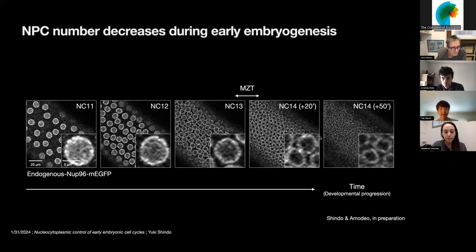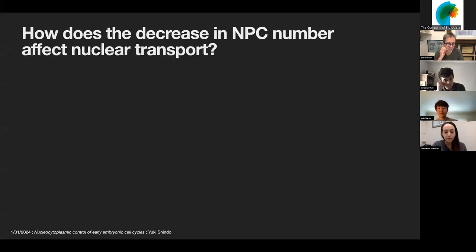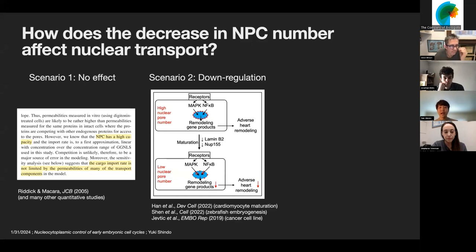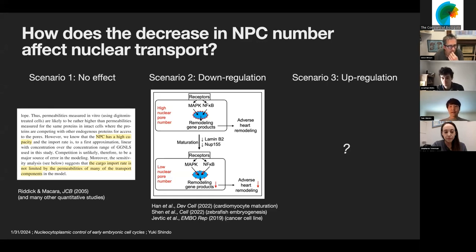This is a very interesting observation, but the next question is how the decrease in NPC number affects nuclear transport. There are a few possible scenarios. One possibility is that there is actually no effect, because it's known that NPCs have really high capacity for nuclear transport. Another possibility would be down-regulation in response to a reduction in NPC number, which has been proposed to occur in some cell types. And finally, in theory, you could have up-regulation, although this is somewhat counter-intuitive.